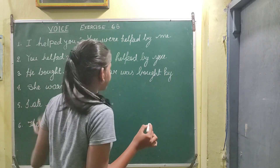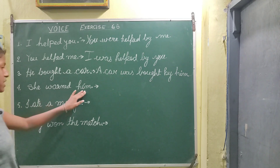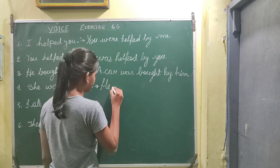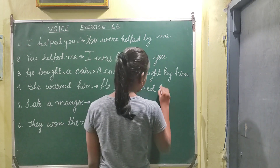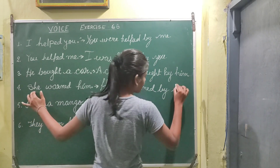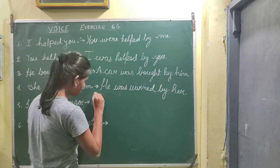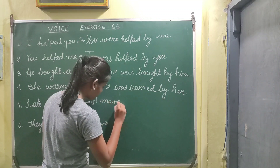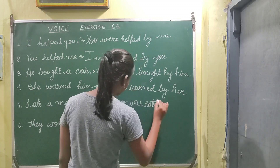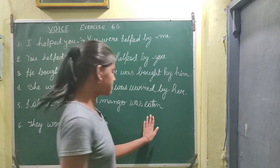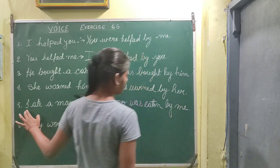'By he' will be transformed to 'him.' Next, 'She warned him.' So 'him' will become 'he': 'He was warned by her.' Next, 'I ate a mango.' So 'a mango was eaten' — eat's V3 will be 'eaten' — 'by me.'